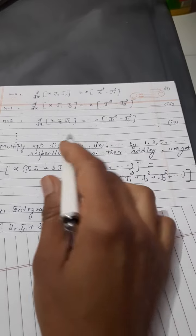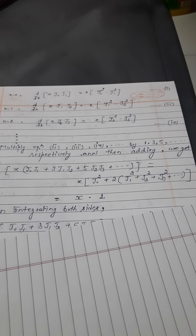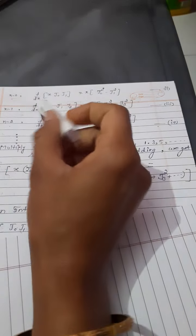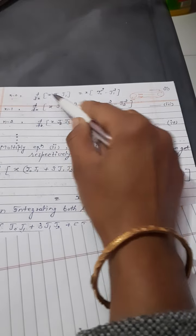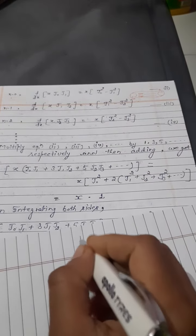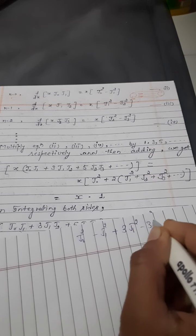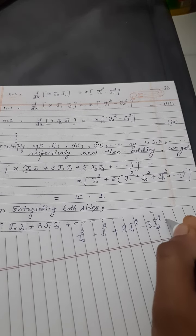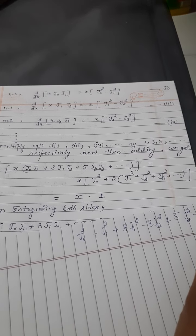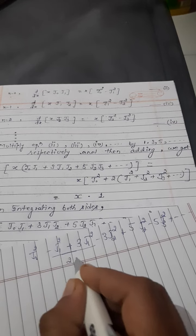Equation 2nd, 3rd, 4th को 1, 3, and 5 से respectively multiply करो और then add करो। Left hand side में differentiation of x common है: J₀J₁ plus 3J₁J₂ plus 5J₂J₃ plus and so on. Right hand side: J₀² minus J₁² plus 3J₁² minus 3J₂² plus 5J₂² minus 5J₃² — तो यह हो जाएगा J₀² plus 2J₁² plus 2J₂² plus and so on।